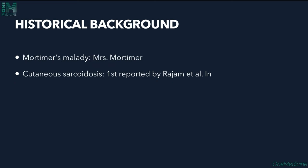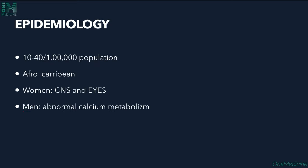It is also called Mortimer's malady since it was identified in Mrs. Mortimer, and cutaneous sarcoidosis was first reported by Rajam et al. Epidemiologically, it is seen in 10 to 40 per lakh population. Afro-Caribbeans are mostly susceptible. Women have CNS and eye manifestations, whereas men have abnormal calcium metabolism.